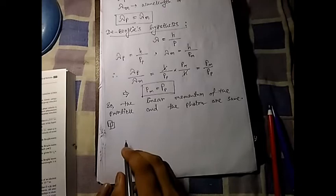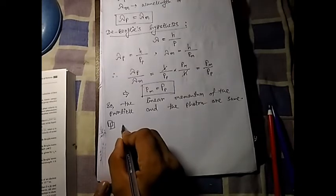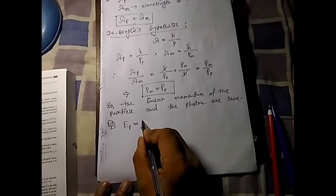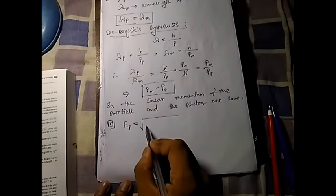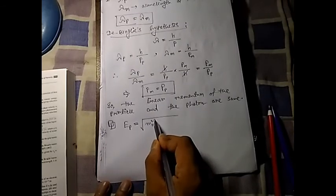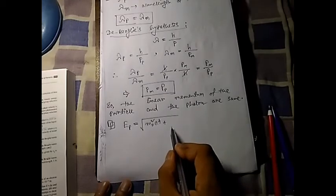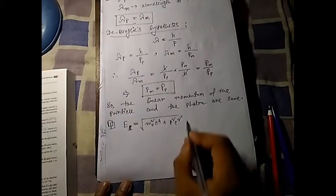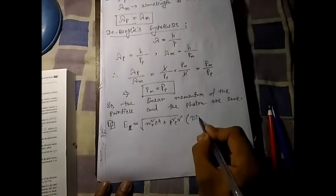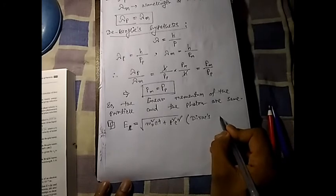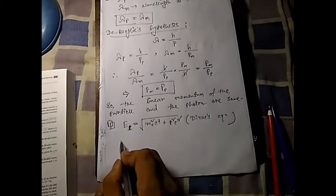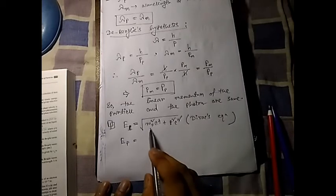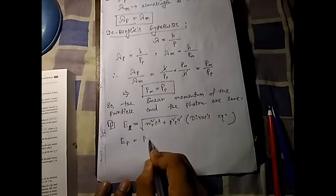Now for the second point: how does the photon's energy compare with the particle's total energy? If we write the photon's energy E_p using the relativistic Dirac formula, the general energy of any particle is the square root of m-naught squared c to the power 4 plus p squared c squared. For a photon, the rest mass is zero, so the photon's energy E_p simplifies to just p times c.